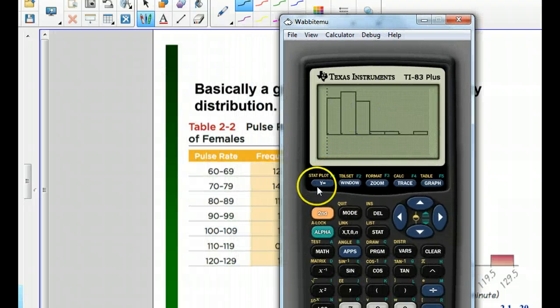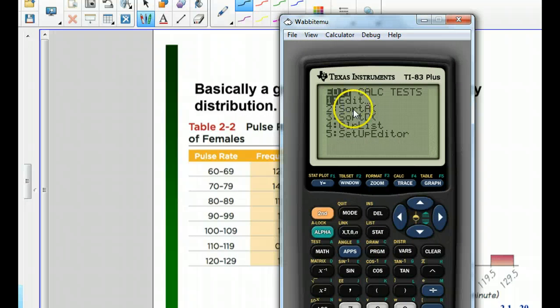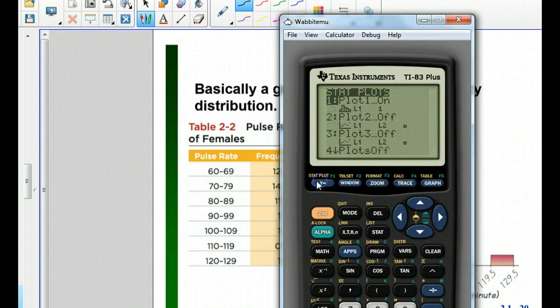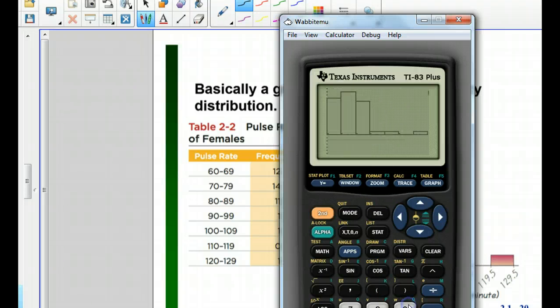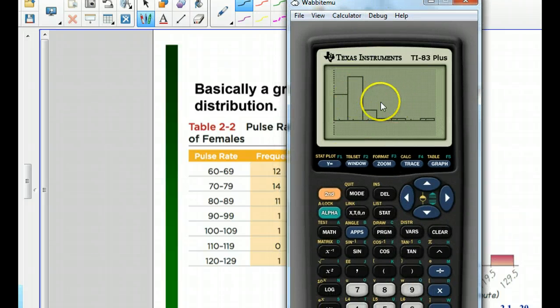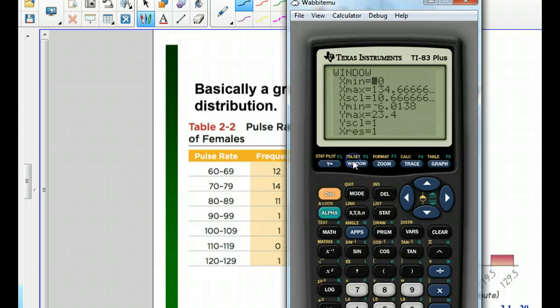You just put your data in the stat menu in the editor. Once you've got your data in there, second Y equals for the stat plot, make sure it's turned on. Zoom nine is your zoom statistics menu, and then change the window as needed.